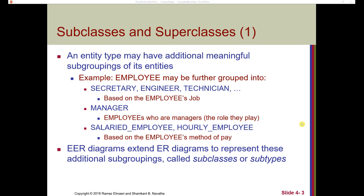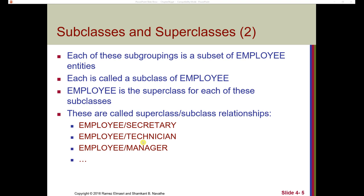For the purposes of this class, I'm going to use the term subclass and superclass. Sometimes we want to have subgroupings of a particular entity type. For example, we have an employee superclass and we want to represent different types of employees that may have separate attributes. Secretary might have attributes different from technician, different from manager, but each of these subclasses will inherit certain attributes from the superclass of employee — for example, the primary key. So each of these subclasses can have a primary key from employee; they would each have an employee ID.